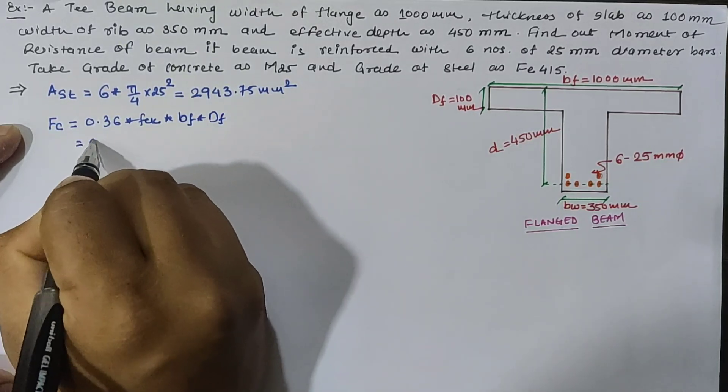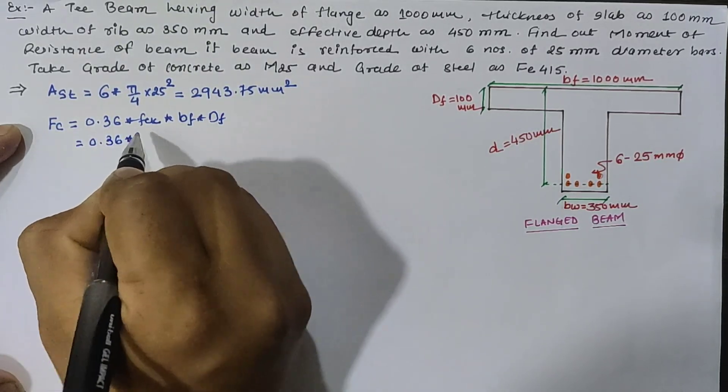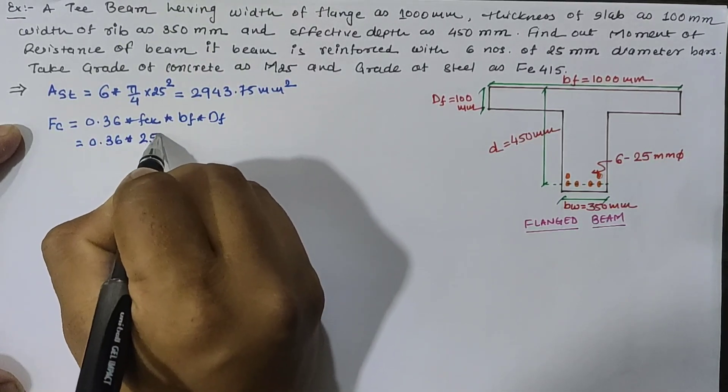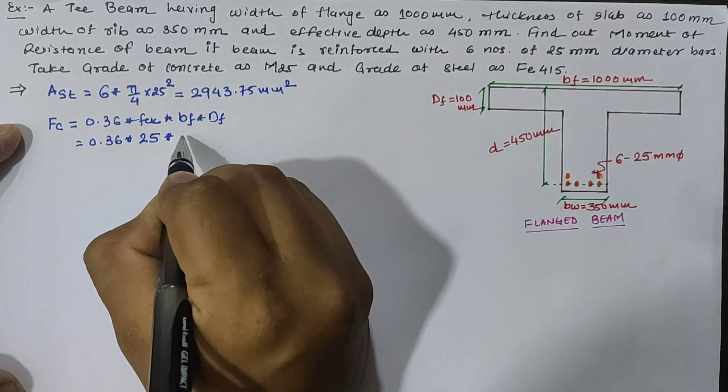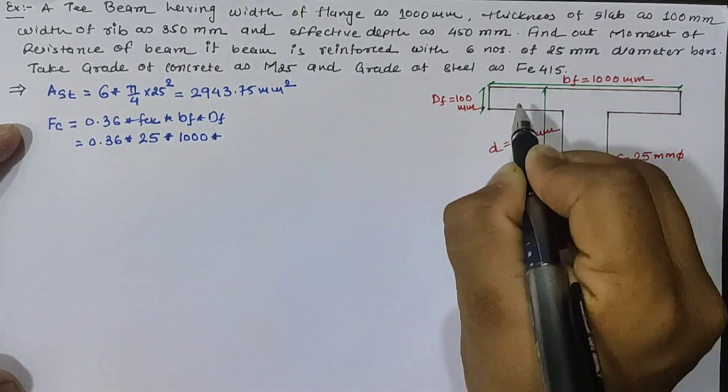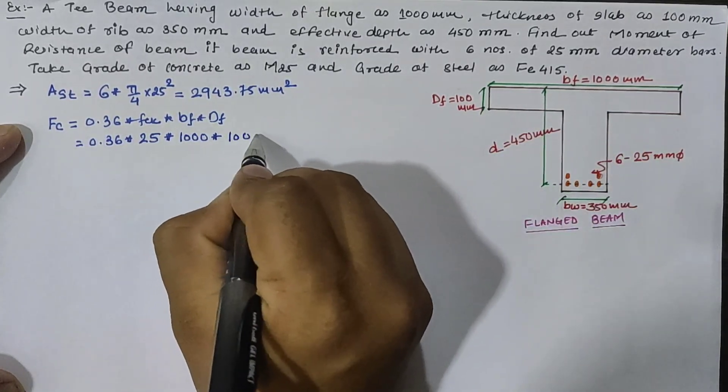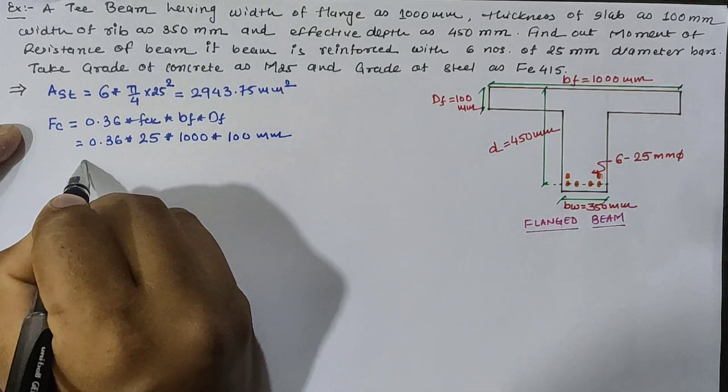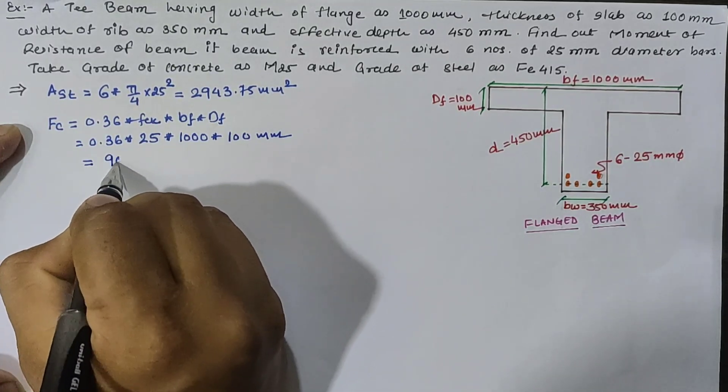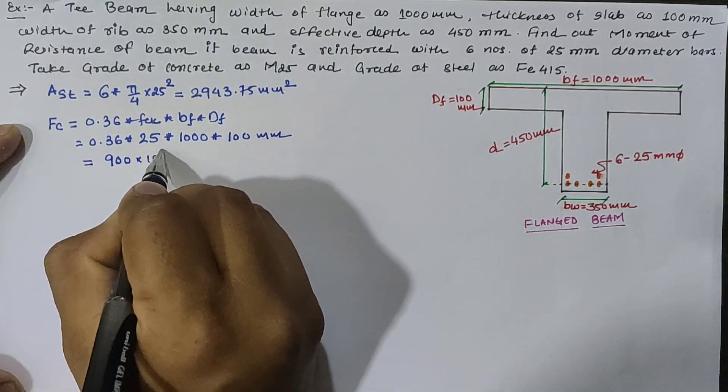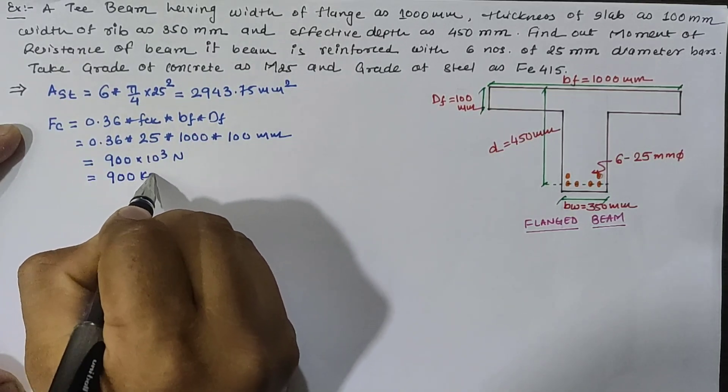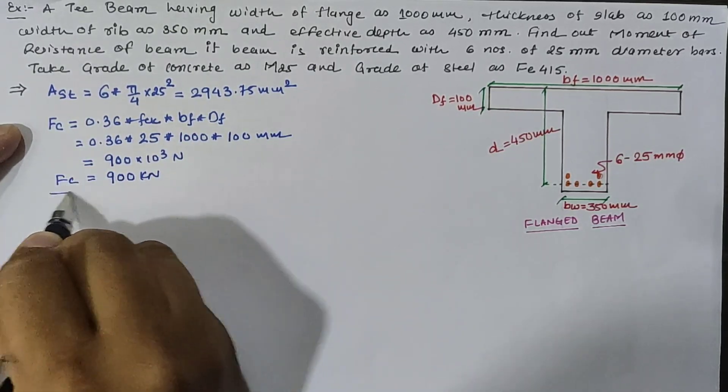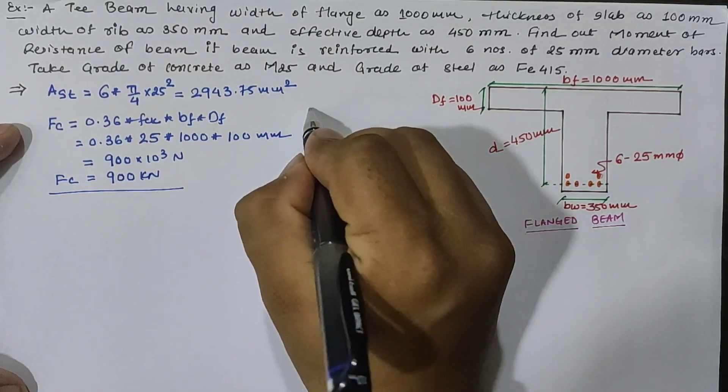Now 0.36 is constant, fck is given as 25 N/mm² as M25 grade of concrete, width of flange is given as 1000 mm, and depth of flange is given as 100 mm, which is equal to 900 × 10³ N, which is 900 kN as compressive force.